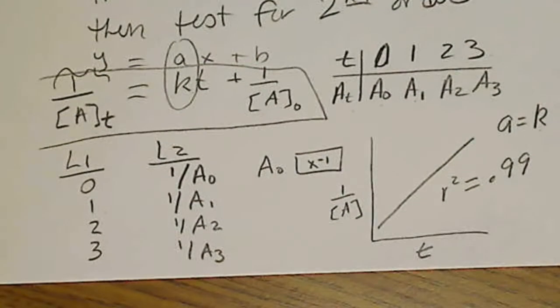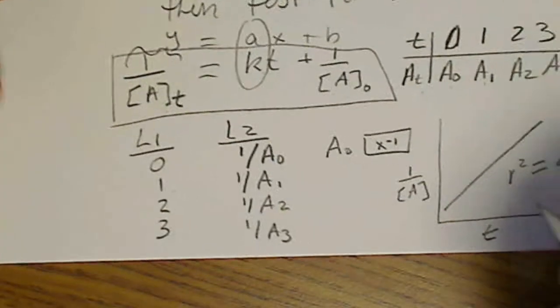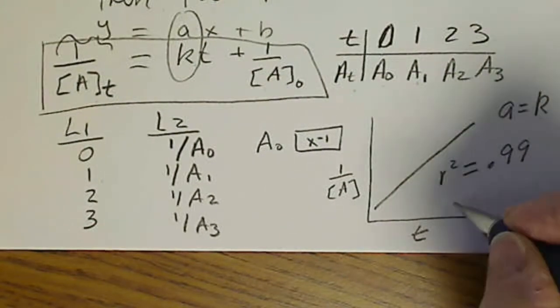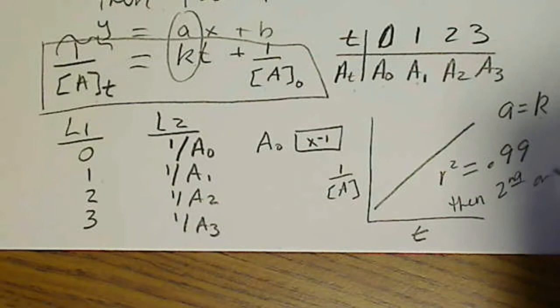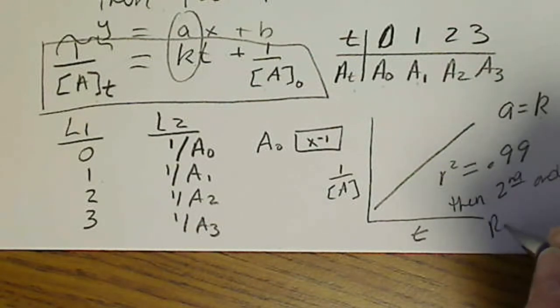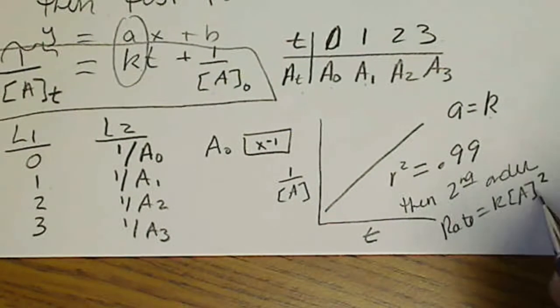And then I'll squeeze this in somewhere. If we do have second order, if R squared is at least 0.99, then the reaction is second order. That means rate equals K times the concentration of A squared.